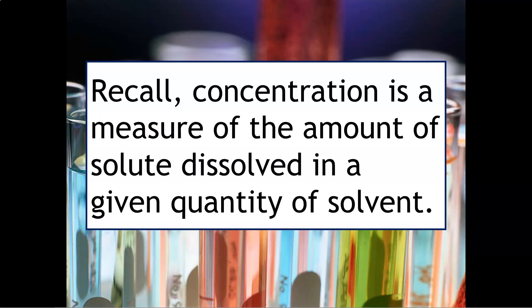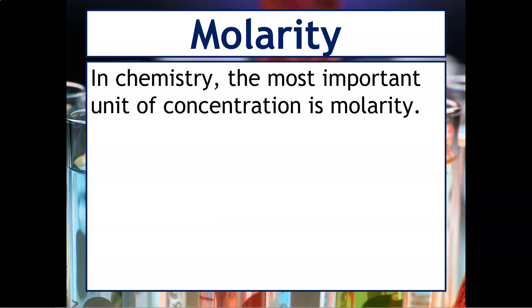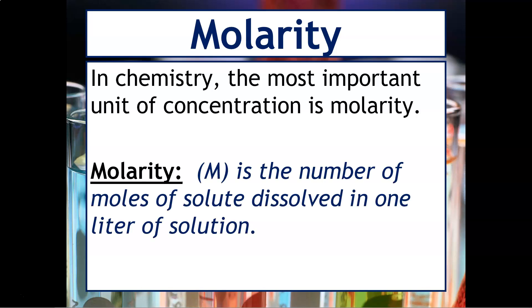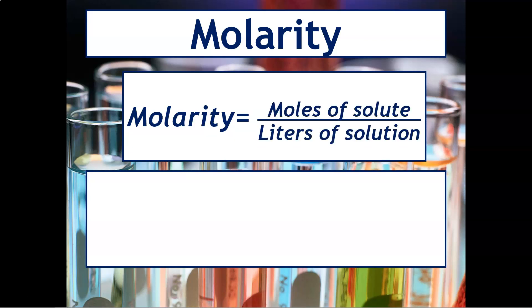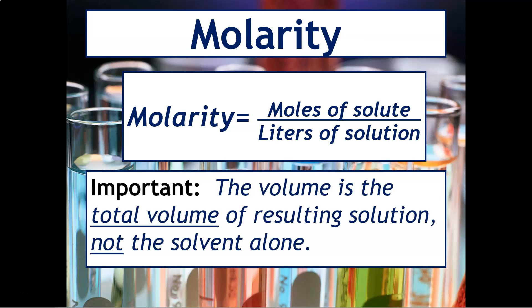Concentration is a measure of the amount of solute dissolved in a given quantity of solvent. Molarity is the most important unit we use to describe concentration in chemistry. Molarity is represented by big M and is defined as the number of moles of solute dissolved in one liter of solution. The formula is: Molarity equals moles of solute over liters of solution. It's important to note that the volume is the total volume of the resulting solution, not just the solvent alone.